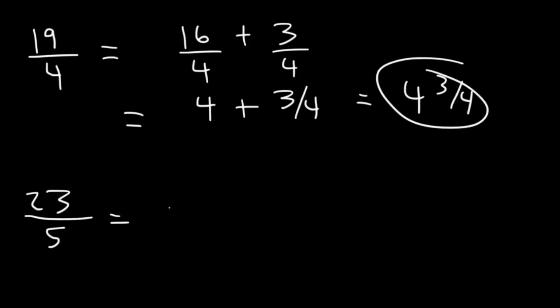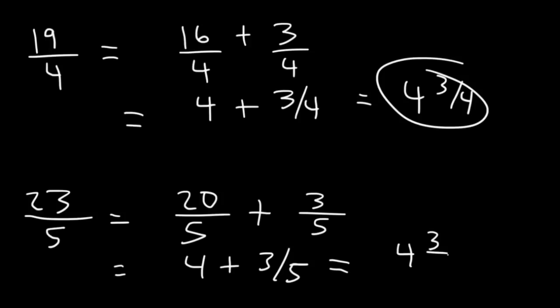Or, if you do it the other way, you can break up 23 into 20 and 3. 20 divided by 5 is 4. 4 plus 3 fifths is also 4 and 3 fifths. So, now you know how to convert an improper fraction into a mixed number.